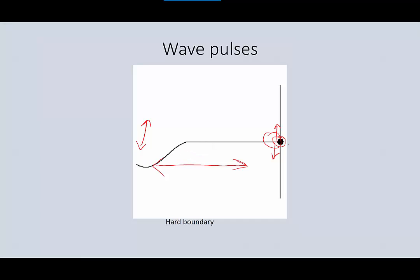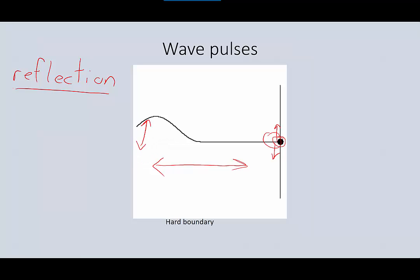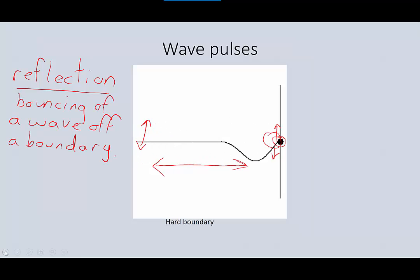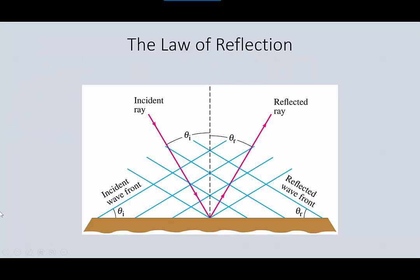What we've seen here is the first property of a wave — it is called reflection. Reflection is essentially the bouncing of a wave off of a boundary. Now let's look at reflection in terms of a static picture of a wave as it hits the boundary. We have this thing called the law of reflection. The incident ray coming in on the left, shown in red, represents a whole wave front coming in — lots and lots of rays, but we're focused on this one red ray at this center point.